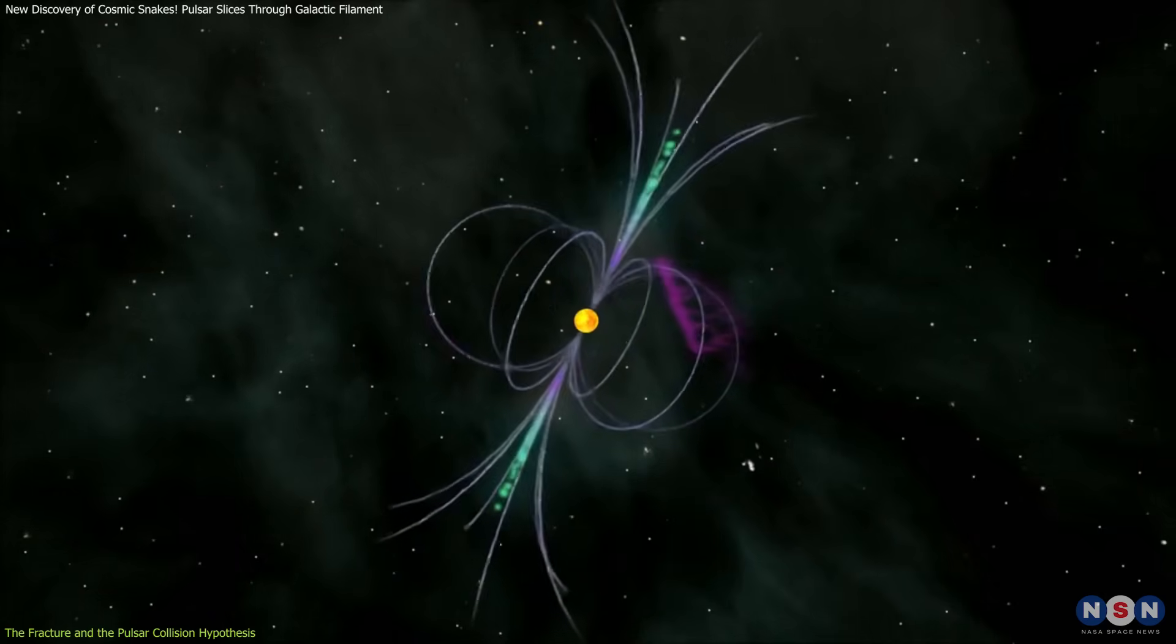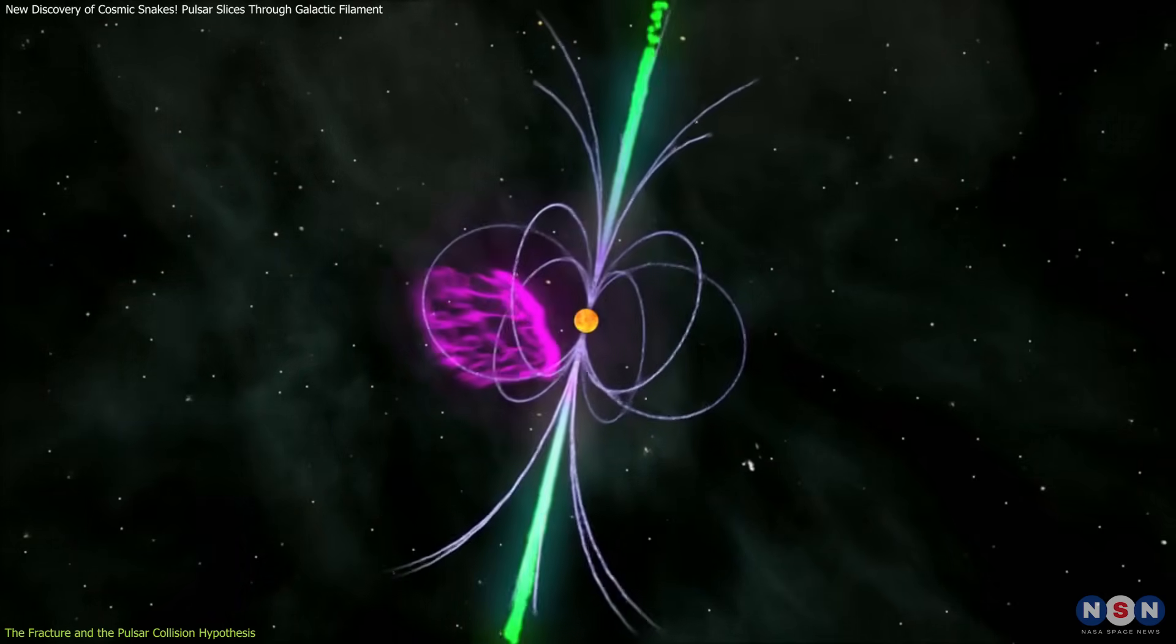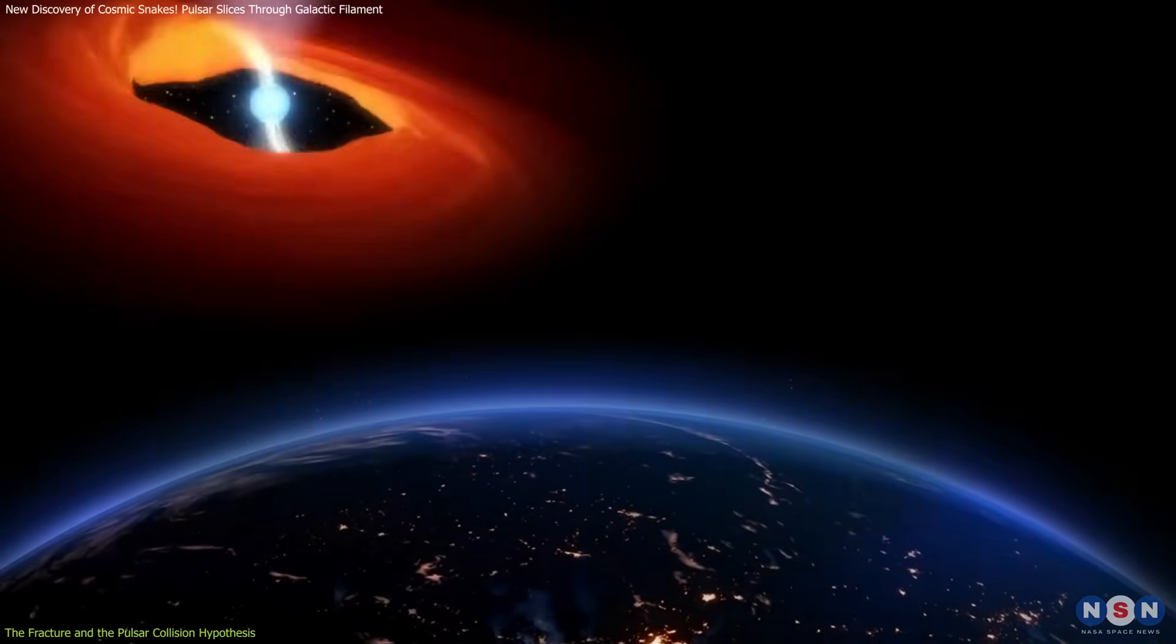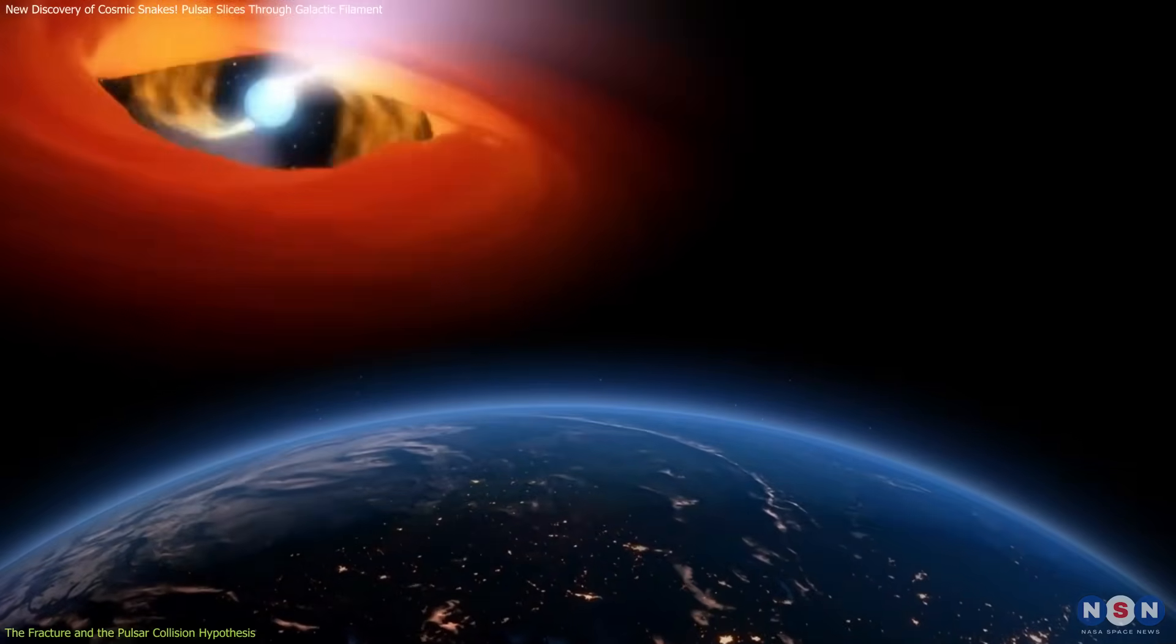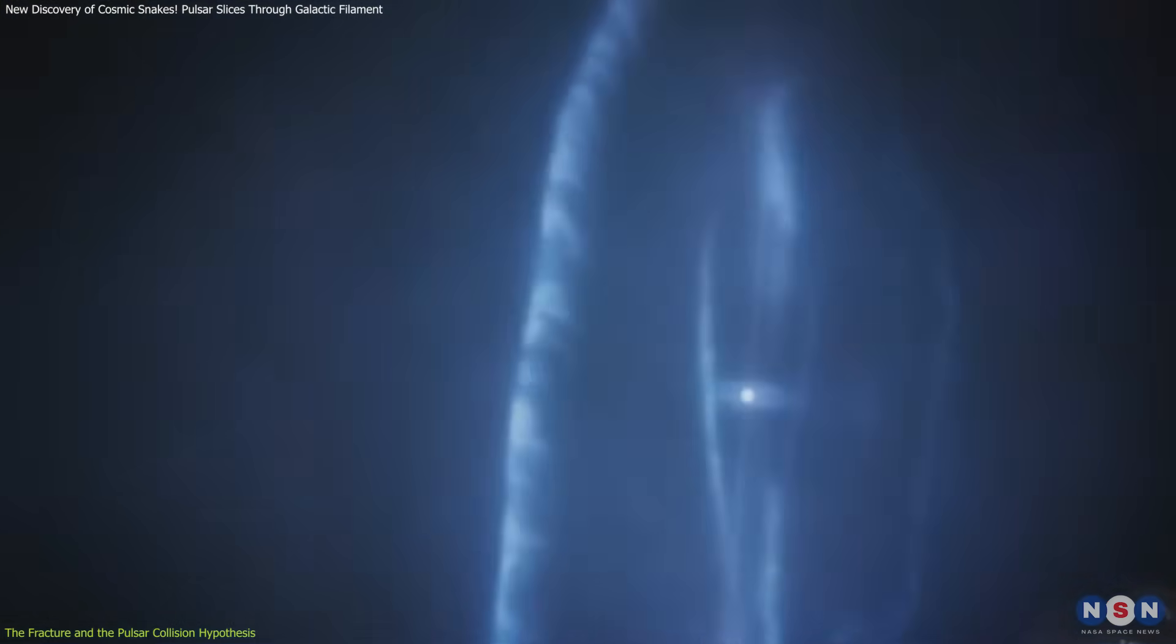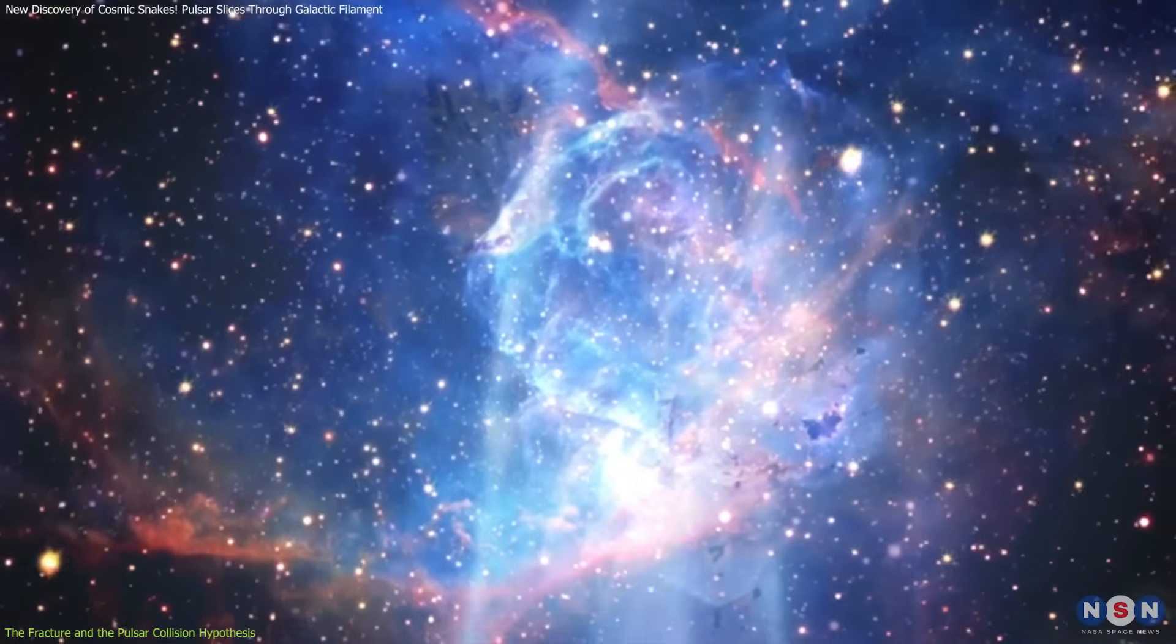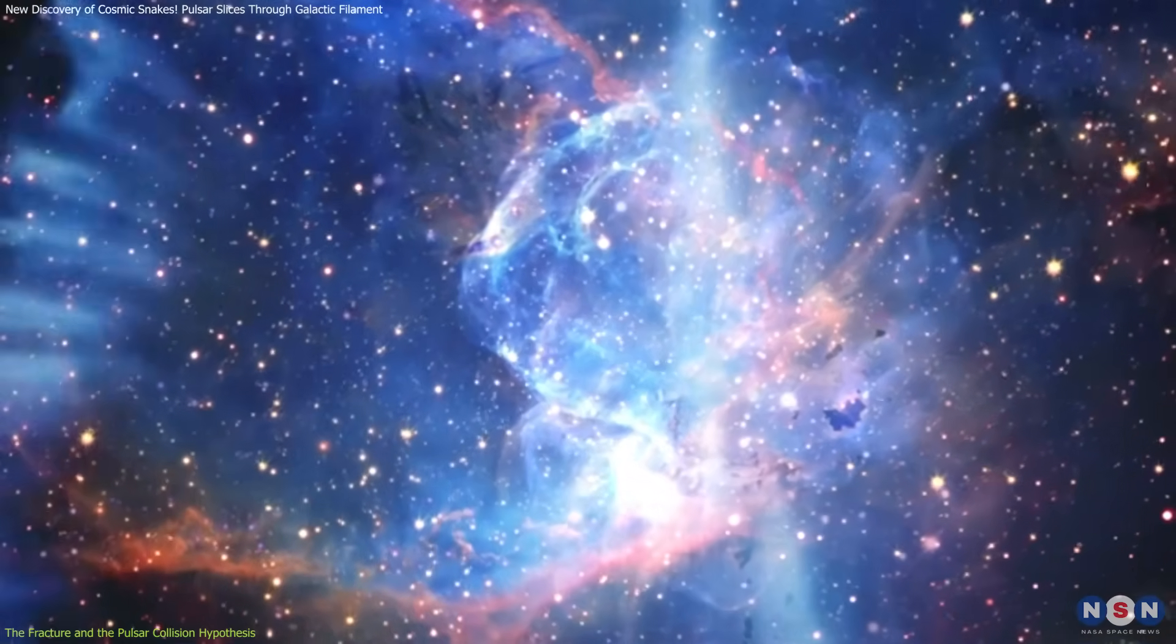Pulsars emit beams of radiation from their poles, which sweep through space like lighthouse beams. When these beams face Earth, we detect them as pulses—hence the name. But pulsars also release winds of high-energy particles, creating pulsar wind nebulae as they interact with the surrounding interstellar medium.